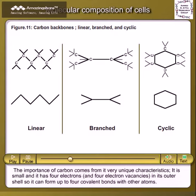The importance of carbon comes from its very unique characteristics. It is small and it has four electrons and four electron vacancies in its outer shell, so it can form up to four covalent bonds with other atoms.